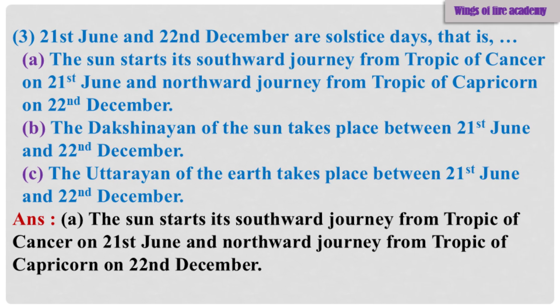Sub-Question 3: A. The sun starts its southward journey from Tropic of Cancer on 21st June and northward journey from Tropic of Capricorn on 22nd December. B. The Dakshinayan of the sun takes place between 21st June and 22nd December. C. The Uttarayan of the earth takes place between 21st June and 22nd December. Answer: A. The sun starts its southward journey from Tropic of Cancer on 21st June and northward journey from Tropic of Capricorn on 22nd December.